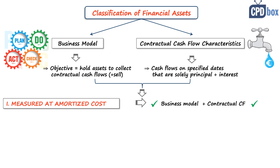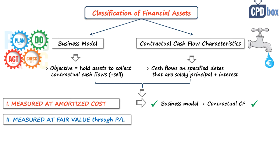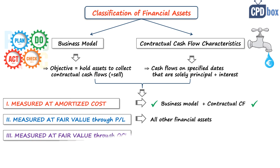The second category is financial assets measured at fair value through profit or loss, where all other financial assets not meeting the two tests belong. All derivative financial assets automatically fall into this category. Also, even if a financial asset meets the two tests, you may voluntarily choose to measure it at fair value through profit or loss rather than amortized cost.